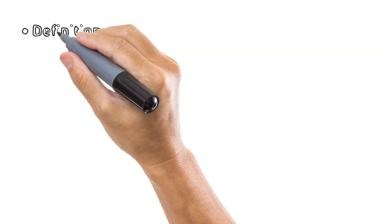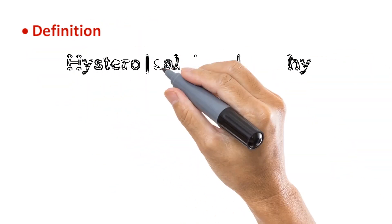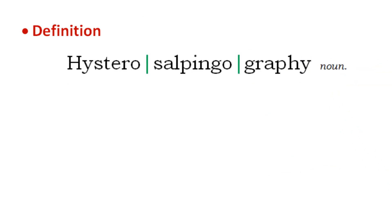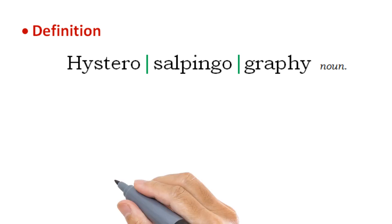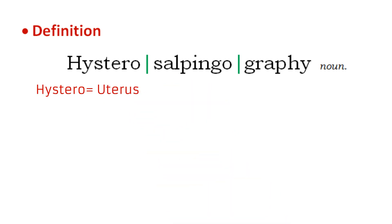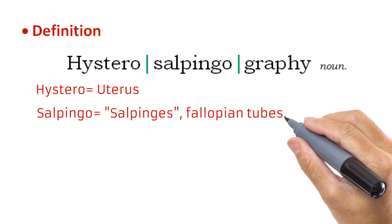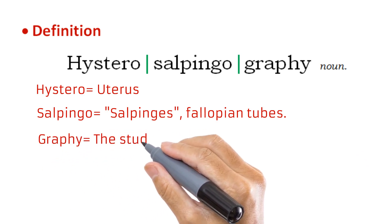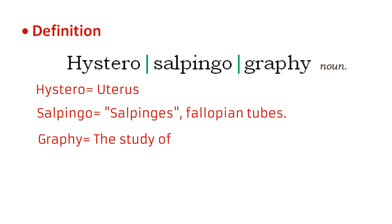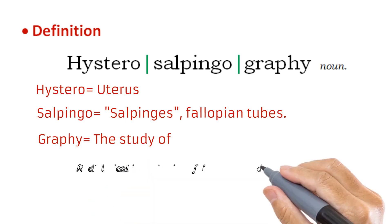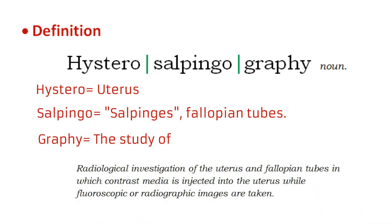Hysterosalpingography is made up of three words coined from ancient Greek and 19th century Latin: hystero, salpingo, and graphi. Hystero refers to the uterus, salpingo refers to the salpinges — more commonly known as the fallopian tubes — and graphi means the study of something. Hysterosalpingography is therefore the radiological investigation of the uterus and fallopian tubes, in which contrast media is injected into the uterus while fluoroscopic or radiographic images are taken.